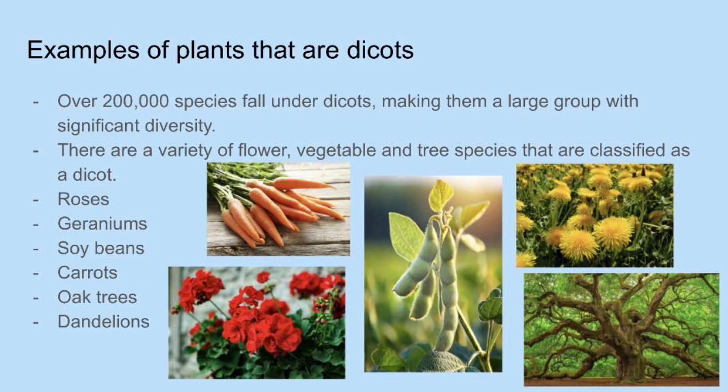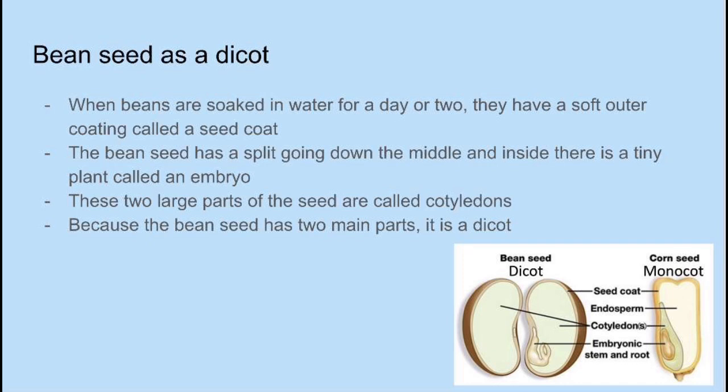Here are some images of the examples. Bean seeds are an example of a dicot, because when beans are soaked in water for a day or two, they have a soft outer coating called a seed coat. The bean seed has a split going down the middle, and inside there's a tiny plant called an embryo. These two large parts of the seed are called cotyledons, and because the bean seed has two main parts, that's what makes it a dicot. You can see in the image in the bottom corner what a bean seed would look like — that's a dicot versus a corn seed, which is an example of a monocot.